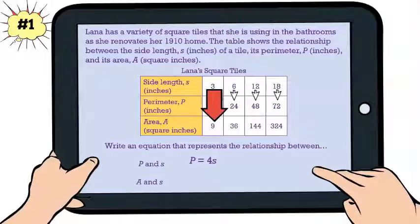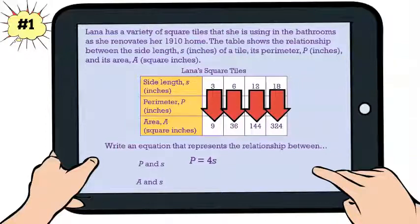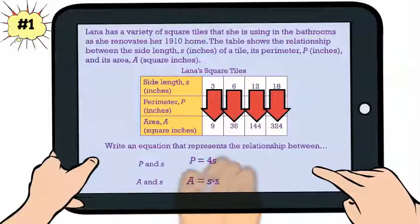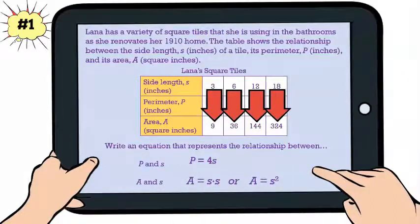Now let's see if we can see a pattern from the side length to the area. Well, 3 times 3 is 9, but 6 times 3 is not 36. It's 6 times 6. That's it. The side length times itself gives me the area. So it's A = S × S, or A = S².